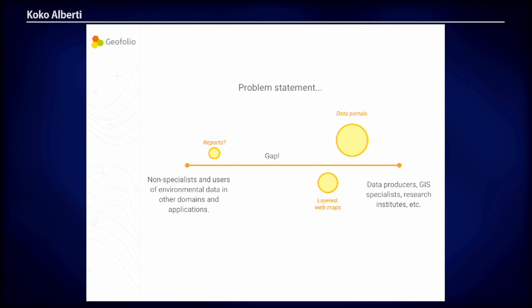Then there's the layered web maps, which are also quite popular. You've all probably seen them — a web map with a big layer panel on the left with 20 or 30 layers you can toggle on or off, change the opacity, and mix and match what you want to see. And then there's a gap.